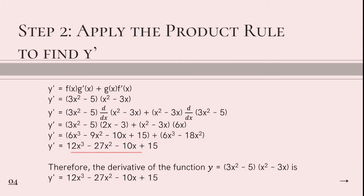So we'll get 12x cubed minus 27x squared minus 10x plus 15. Therefore, the derivative of the function y is equal to 3x squared minus 5 times x squared minus 3x is equal to 12x cubed minus 27x squared minus 10x plus 15.